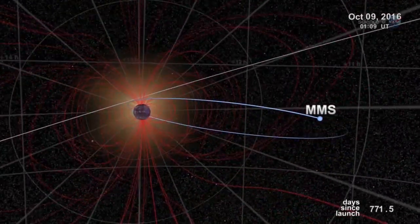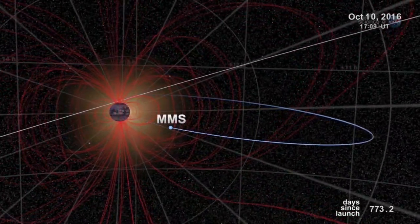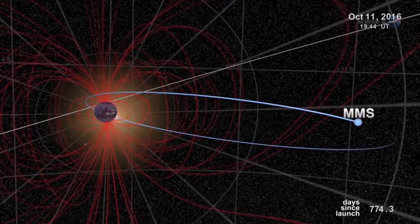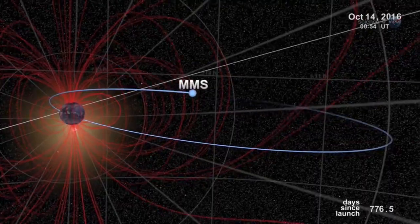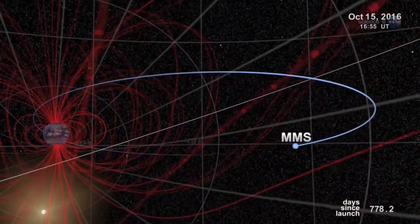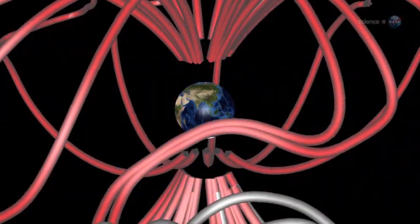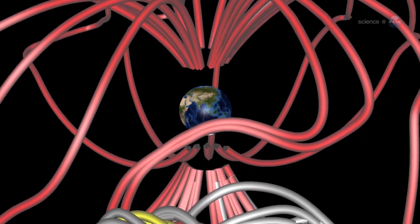Just one problem: finding them. Magnetic portals are invisible, unstable, and elusive. They open and close without warning, and there are no signposts to guide us in, notes Scudder. Actually, there are signposts, and Scudder has found them.